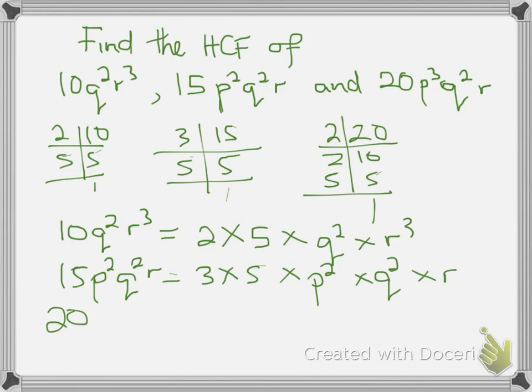For 20p power 3 q squared r, this is equal to 2 squared times 5 times p cubed q squared r. Therefore,